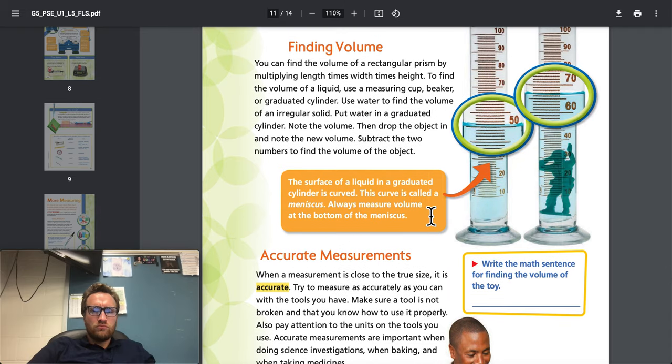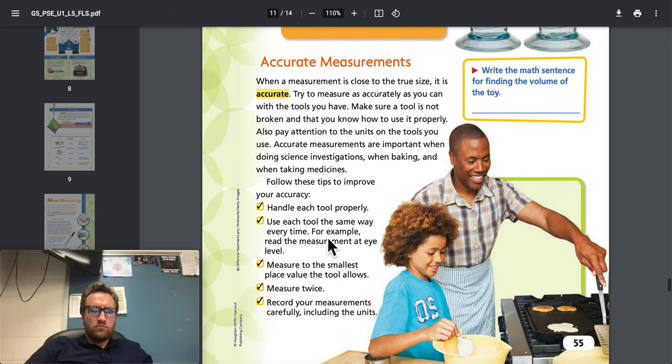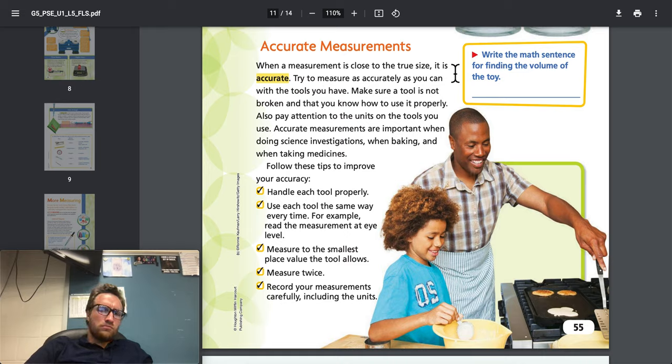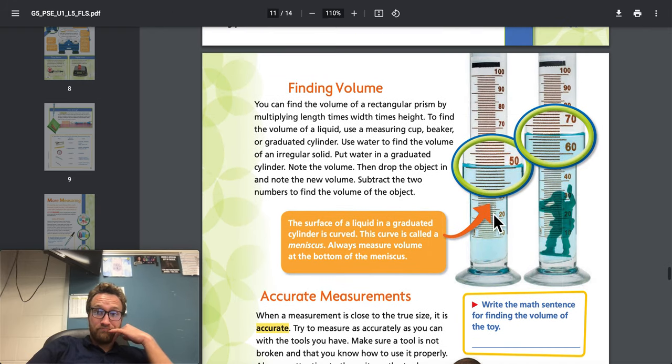Finding volume: You can find the volume of a rectangular prism by multiplying length times width times height. To find the volume of a liquid, use a measuring cup, beaker, or graduated cylinder. Use water to find the volume of an irregular solid. Put water in a graduated cylinder, note the volume, then drop the object in and note the new volume. Subtract the two numbers to find the volume of the object. The surface of a liquid in a graduated cylinder is curved. This curve is called a meniscus. Always measure volume at the bottom of the meniscus. Accurate measurements: When a measurement is close to the true size, it is accurate. Try to measure as accurately as you can with the tools you have. Accurate measurements are important when doing science investigations, when baking, and when taking medicines. Follow these tips to improve your accuracy: handle each tool properly, use each tool the same way every time, measure to the smallest place value the tool allows, measure twice, record your measurements carefully including the units.